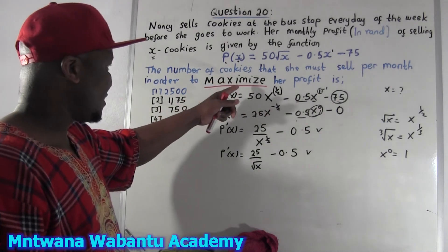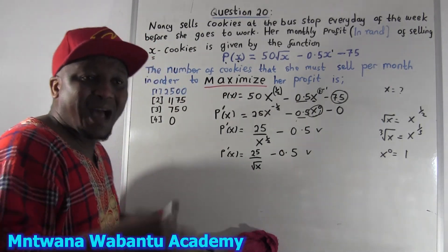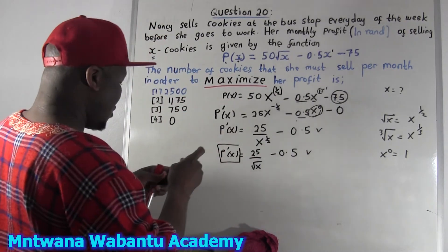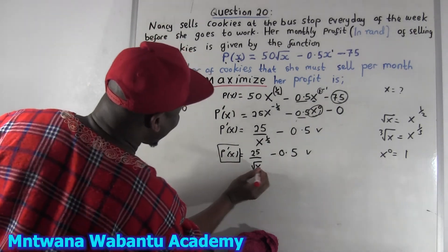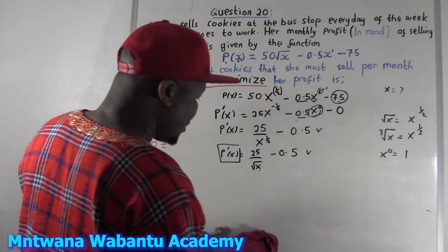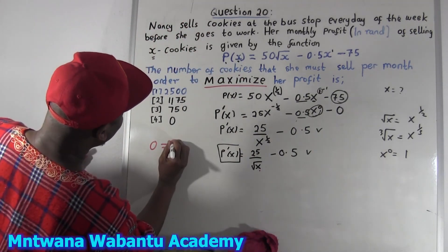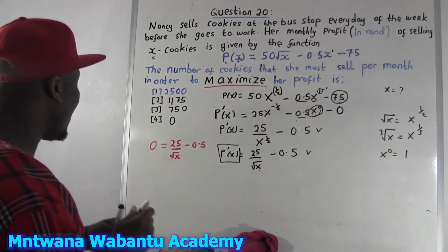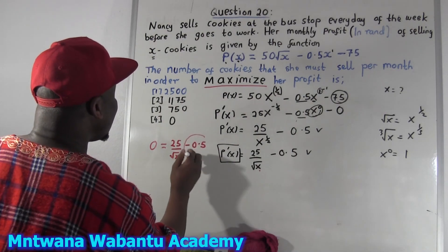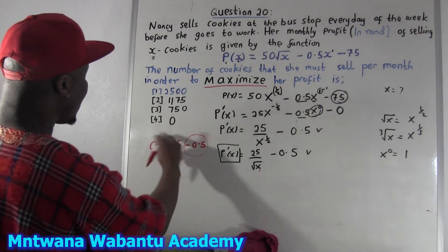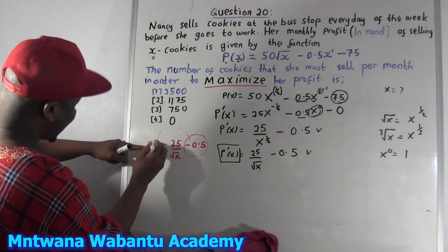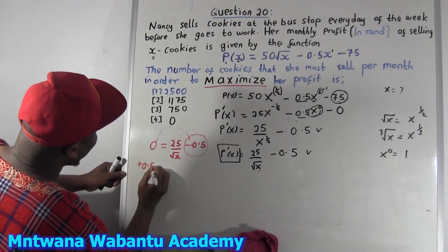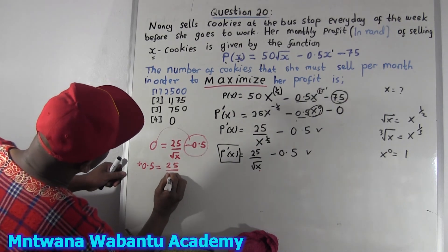To maximize, we equate the derivative to zero. So this equals zero. We have 0 = 25 over square root of x minus 0.5. I'm going to take the 0.5 to the left side — since it's minus, it becomes positive. So 0.5 equals 25 over square root of x.